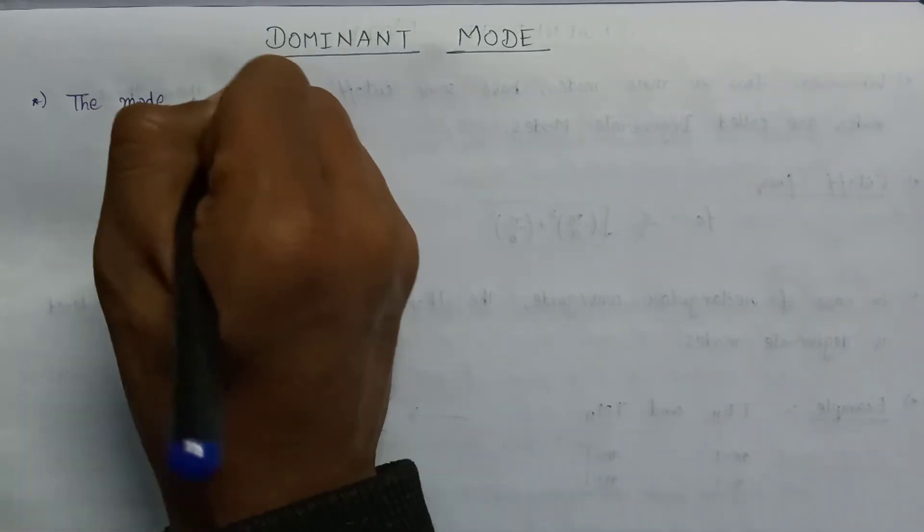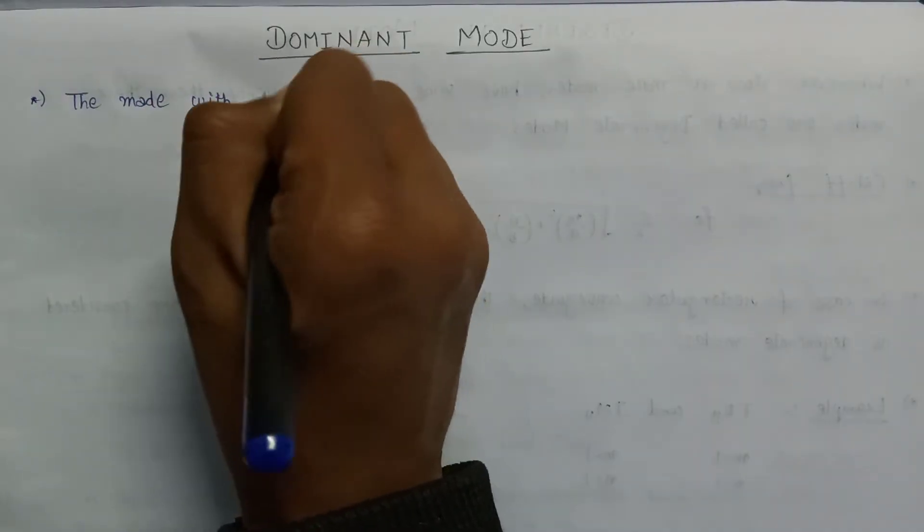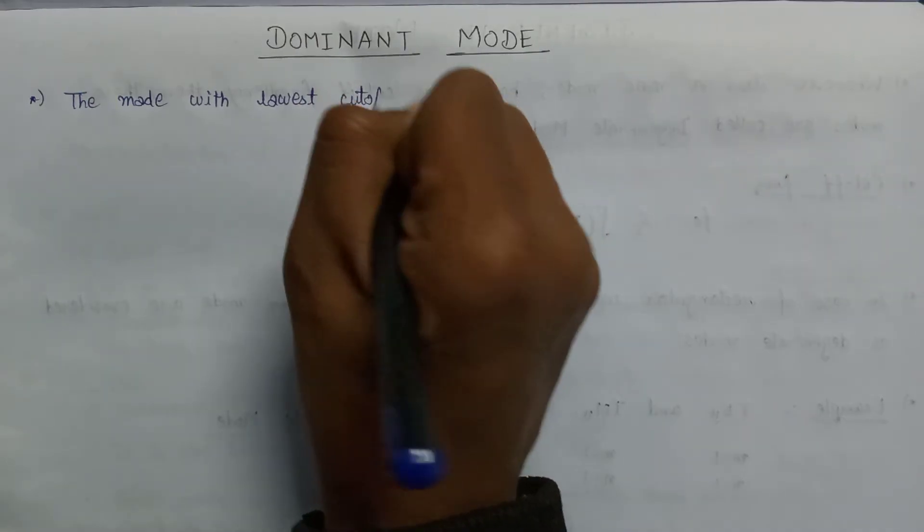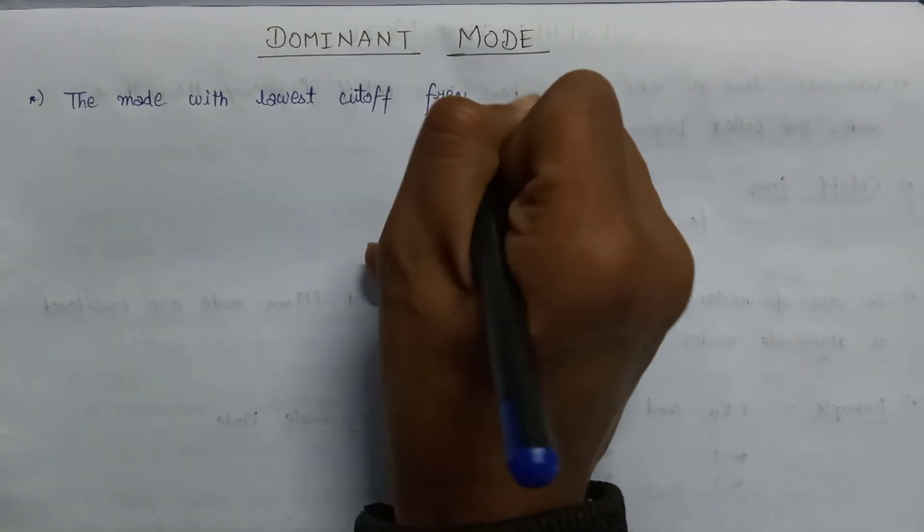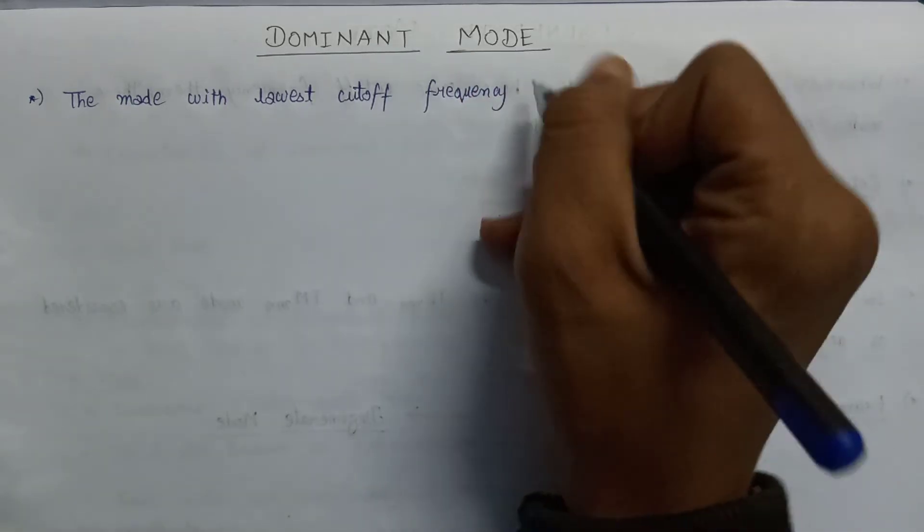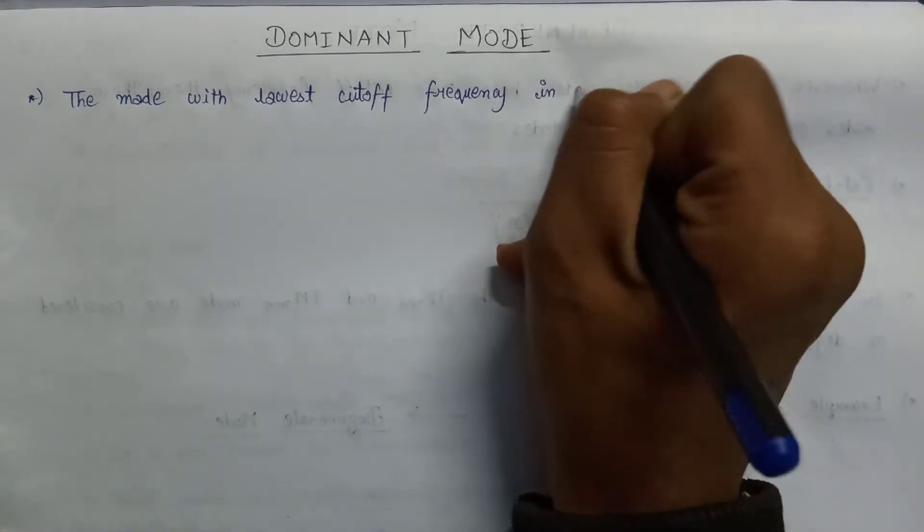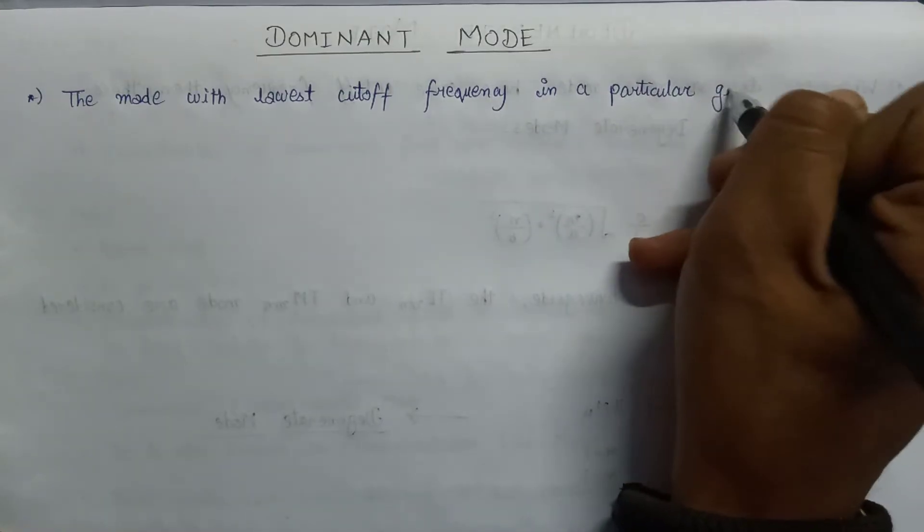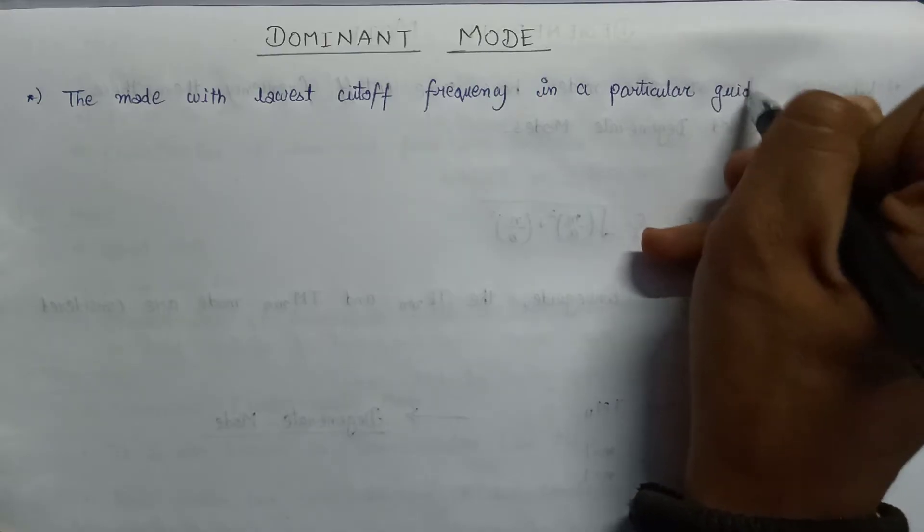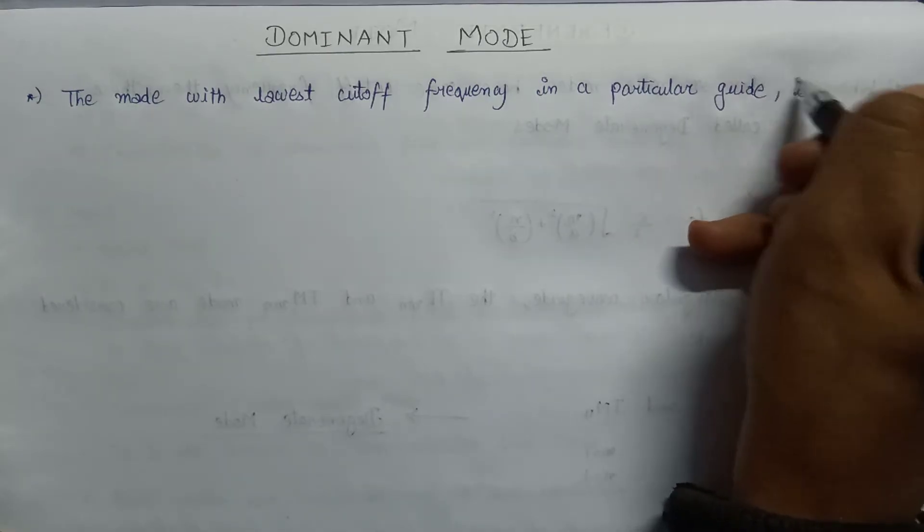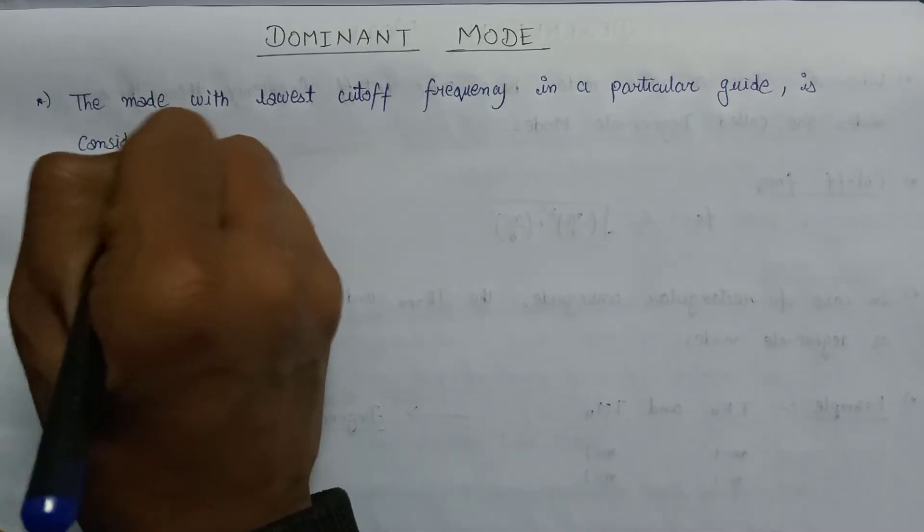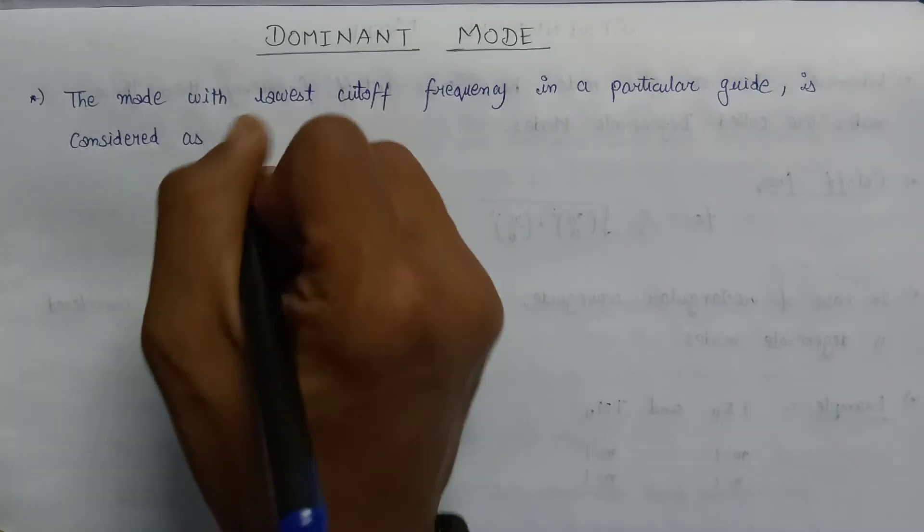The mode with lowest cutoff frequency in a particular guide, or we can say that waveguide, is considered as dominant mode.